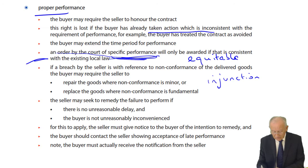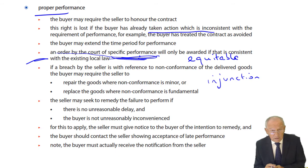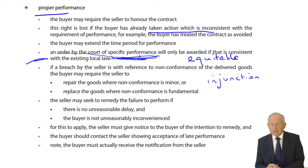A court will order specific performance if it is consistent with existing local law, and if it's available. If it's no longer possible for the seller to perform their share of the contract — for instance, the seller has gone into liquidation — then there's no point in ordering specific performance, as they can no longer perform their share of the contract.